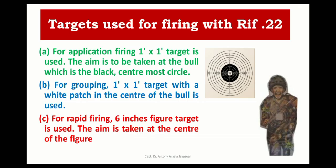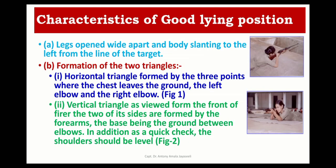The various targets used with the 0.22 rifle are: for application firing, a one-into-one target is used where the aim is at the bull, which is black in the center. For grouping, a one-into-one target is used where the white patch is the center of the bull. For rapid firing, a six-inch figure target is used with the aim taken at the center of the figure. There are three different positions for firing: standing, kneeling, and lying.